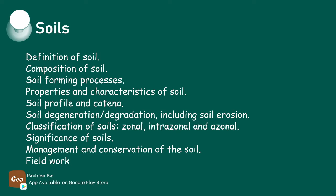Around this topic we are supposed to define what soil profile and soil catena is. Soil profile is a vertical arrangement of different soil layers from the surface of the earth to the bedrock. Soil catena is the arrangement of the soil on a mountain slope from top to bottom.